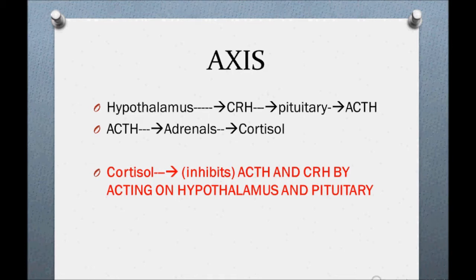There are two types: primary adrenal insufficiency and secondary adrenal insufficiency. In primary adrenal insufficiency, the defect lies in the adrenals. The most common cause is idiopathic. Other causes include Addison's disease, trauma, infections like TB, MAC, cytomegalovirus, fungal infections, and hemorrhages.